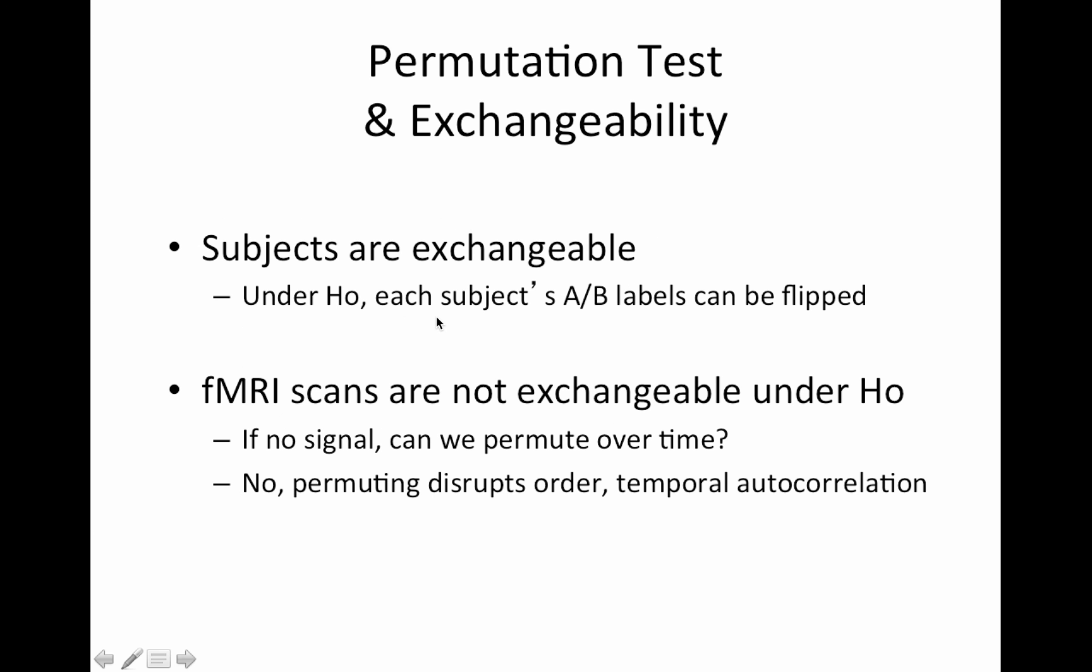So for example subjects are exchangeable under the null, each subject's A, B labels can be flipped. So let's say the A, B labels here are group A, group B. Then we should be able to just flip the labels between A and B. One exception to this rule about subjects being exchangeable is if we have twins in our data set or siblings or family members. If we take the mother in one family and put her as the mother in another family, we've now broken the correlation structure that exists within each family. So that is not exchangeable. But if your subjects are independent, they're exchangeable. FMRI scans are not exchangeable for the same reason, correlation between the measures. In this case it's temporal autocorrelation. So we can't permute our values over time.